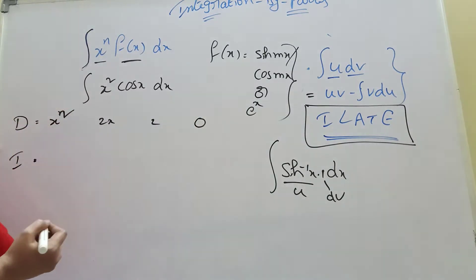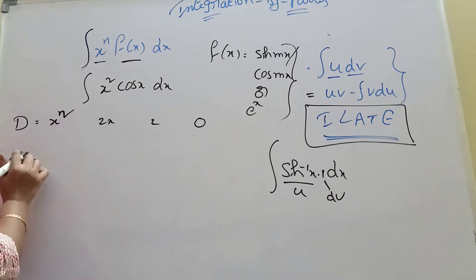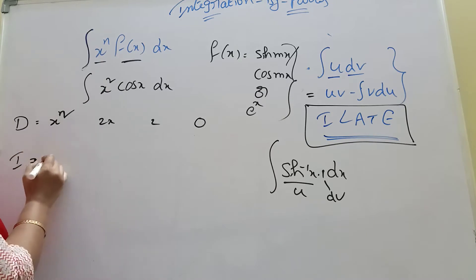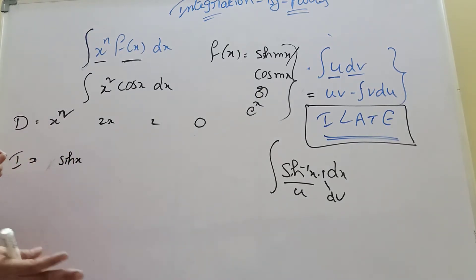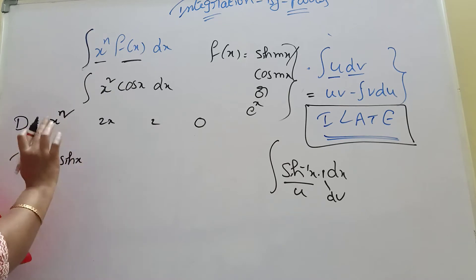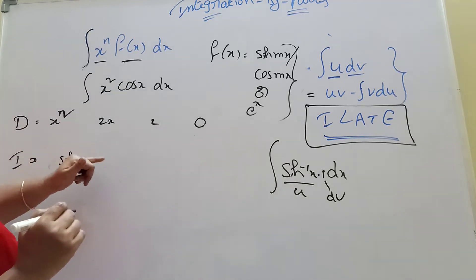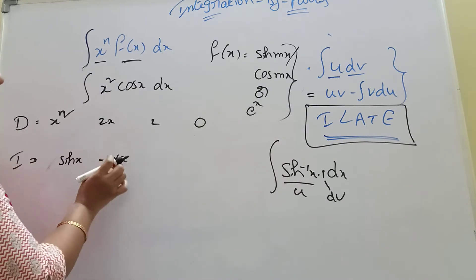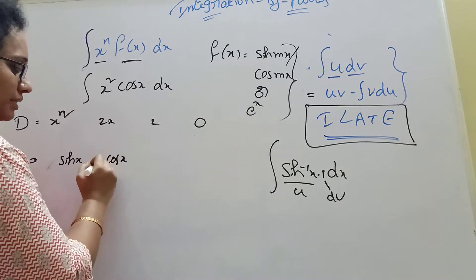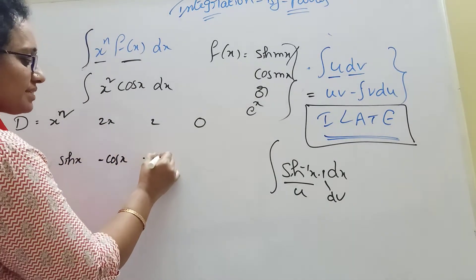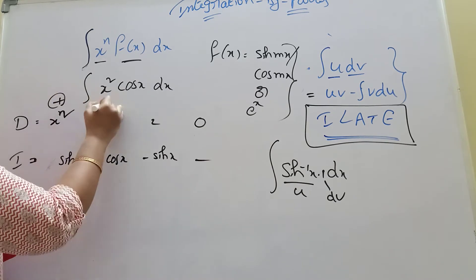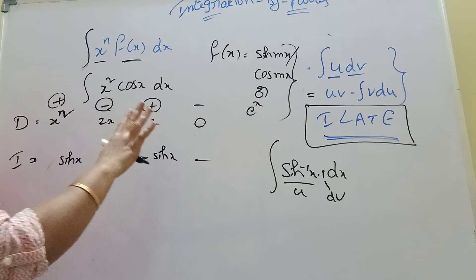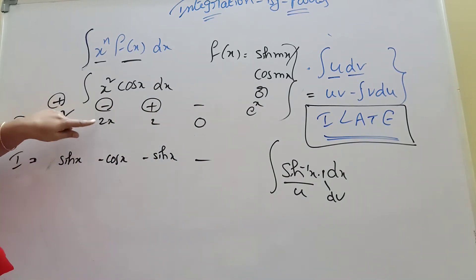The derivative of 2x is 2, and the derivative of 2 is 0. Integration of cos x is sin x, sin x integrates to minus cos x, and minus cos x integrates to minus sin x. We alternate signs: plus, minus, plus, minus in the tabular method.